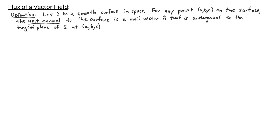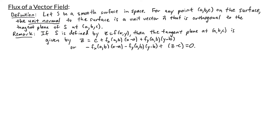Before we start talking about flux, I need to define a few terms. Our first term is the unit normal. Let S be a smooth surface in space. For any point ABC on that surface, the unit normal to the surface is a unit vector n that is orthogonal to the tangent plane of S at ABC. Note that if S is defined by z equals f of xy, then the tangent plane at a point ABC is given by z equals c plus the partial derivative of f with respect to x evaluated at AB times x minus a, plus the partial derivative of f with respect to y at AB times y minus b. This can be rewritten as negative fx at AB times x minus a, minus fy at AB times y minus b, plus z minus c equals zero.